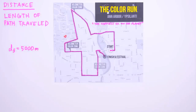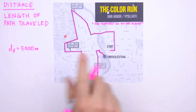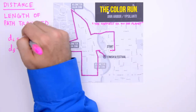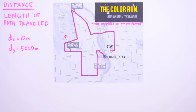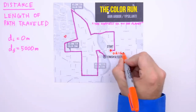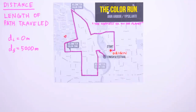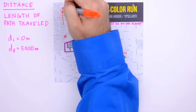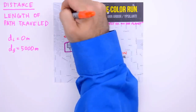Of course, if the final distance is 5,000 meters, that would imply that the initial distance, d sub i, is 0 meters. Implicit in these distances is the location of our origin — the starting line. We'll mark that on our map, and while we're at it, we'll indicate our coordinate system for the map, which is to say, we'll mark the direction of north.